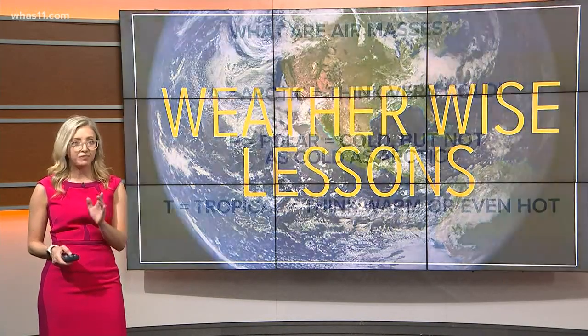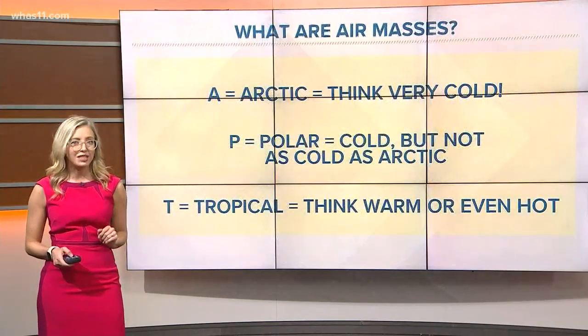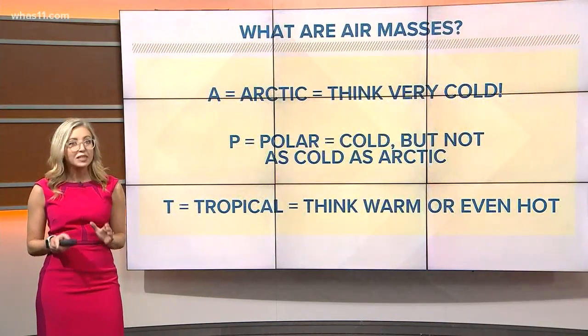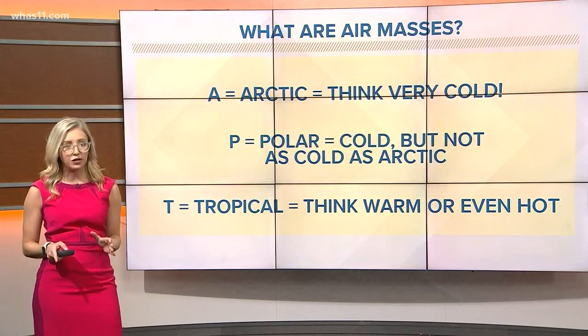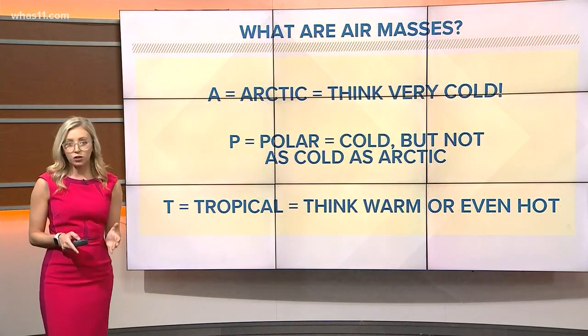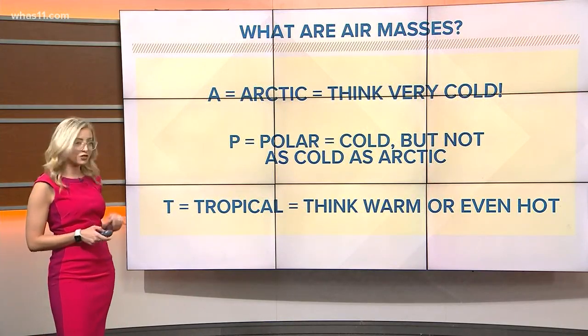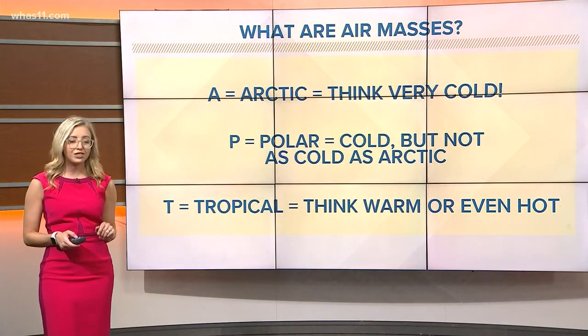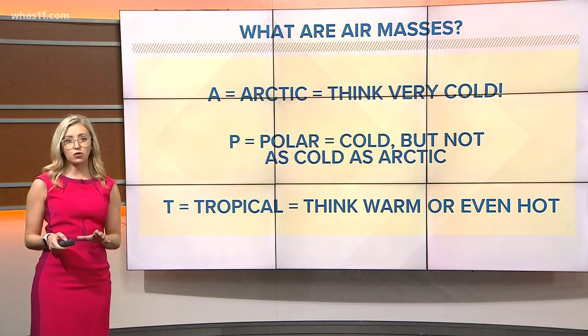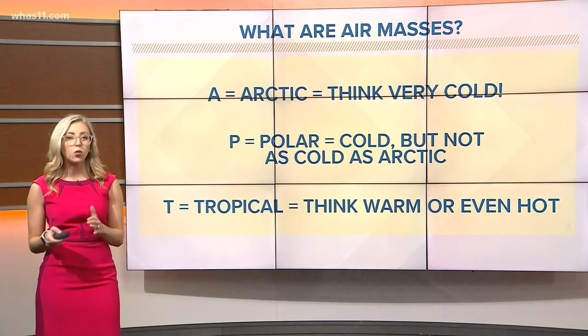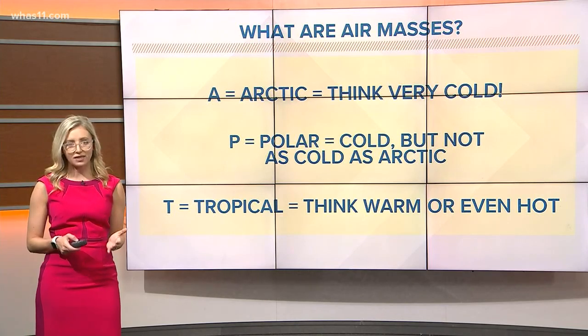Let's look at all of the different types of air masses and classify them. First, A means arctic — that means very cold. P is for polar, which is cold, just not quite as extreme as arctic. T is for tropical — think warm and hot.